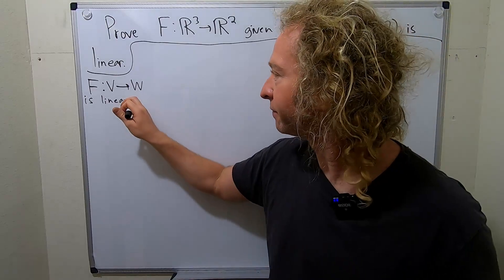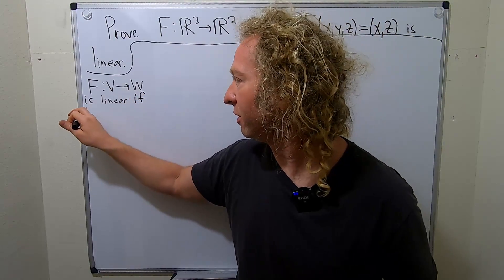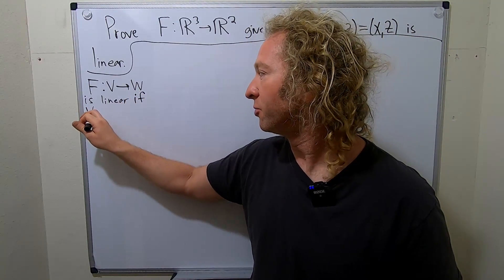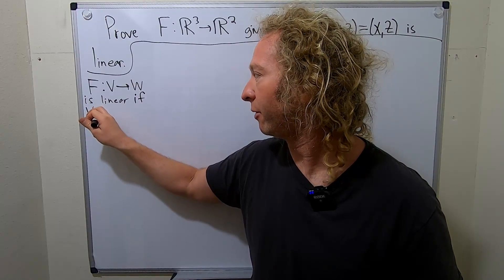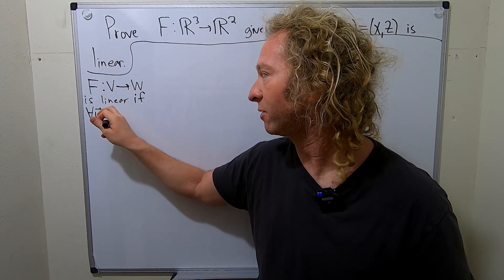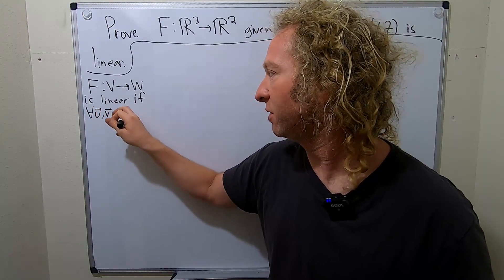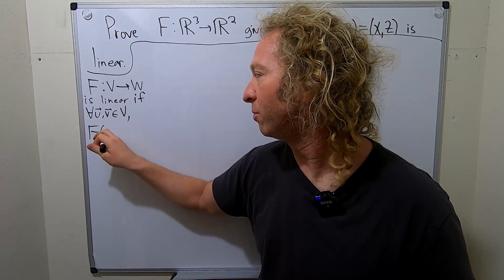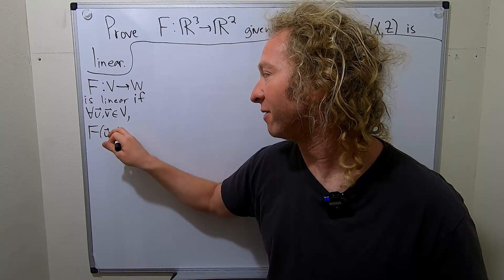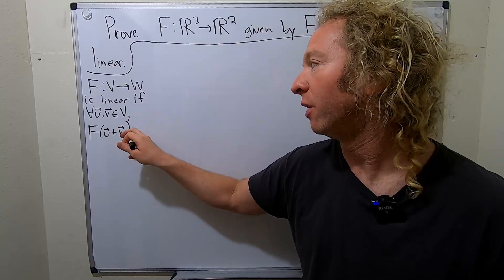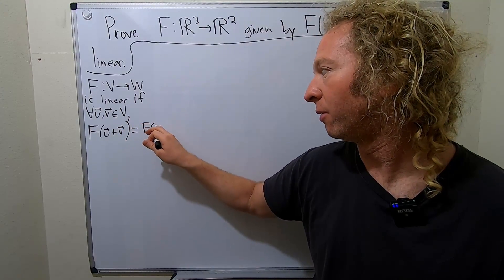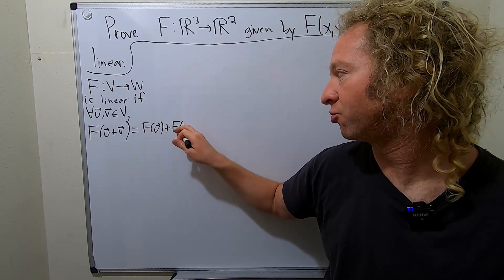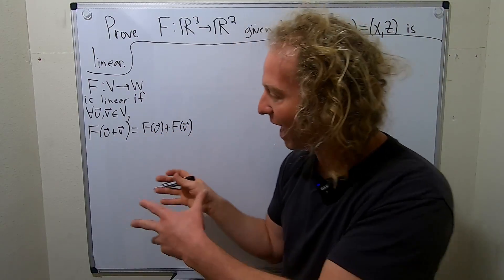So it's linear if, for all — the upside-down A means for all — so for all vectors u and v in our vector space V, we have f of u plus v. So it's additive, and this is equal to f of u plus f of v. It's like f is distributing over the addition — it's an additive function.